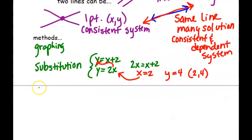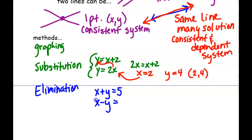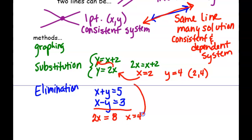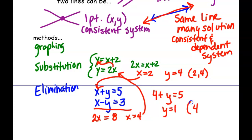The final method we're going to do today is called elimination. A straightforward elimination question might look like x plus y equals 5, x minus y equals 3. You line them up and add them together as long as one of the variables drops out. So you get 2x — the y's drop out — equals 8. Solve that, then plug back in to solve for the other variable, and get an ordered pair.